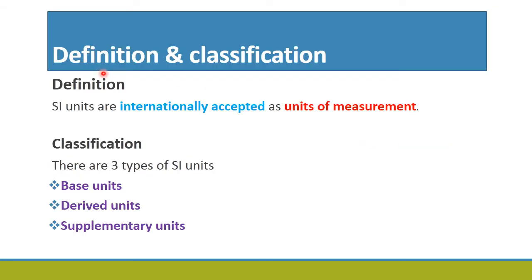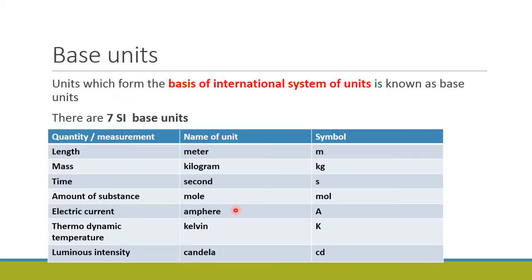Definition and classification: SI units are internationally accepted units of measurement. SI units are classified into three different types: base units, derived units, and supplementary units. We will see each type of classification of SI units.